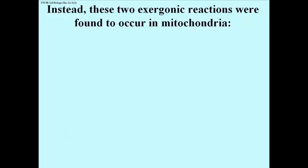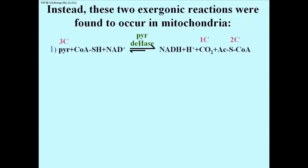Instead, much later in the 1950s, these two reactions — both exergonic — were discovered in the mitochondrion. The first one is the oxidation of pyruvic acid by the enzyme pyruvate dehydrogenase, and as you can see, it's an exergonic reaction.